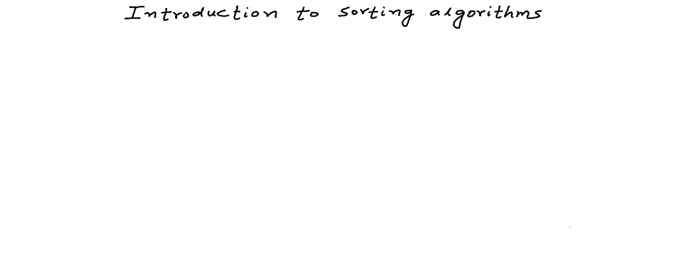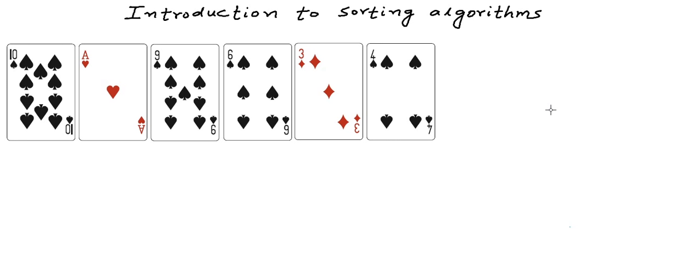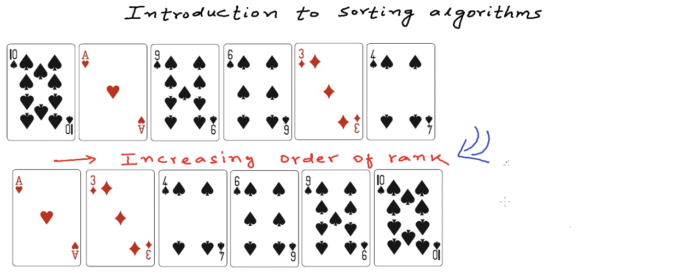For example, something as simple as when we are playing a card game, even though the number of cards in our hand is really less, we like to keep our hand of cards sorted by rank or suit. So let's say this is our hand of cards and we would like to keep it in increasing order of rank, then the arrangement will be something like this.